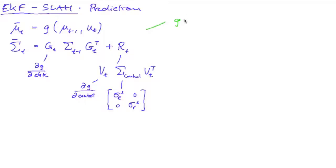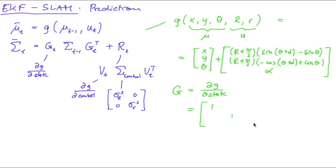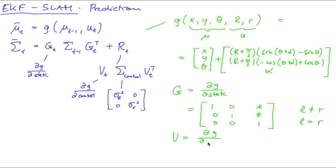The function G we set up was dependent on X, Y, and the heading of the robot, and the left and right control — the state mu and control u. This was the old X, Y, and theta plus those terms. From those terms we obtained the derivative with respect to the state, which was a 3×3 matrix with 1s on the main diagonal and two non-zero terms, with two cases: if the left control differs from the right, or if they are equal. We also computed V, the partial derivative of G with respect to control, which turned out to be a 3×2 matrix of non-zero values.